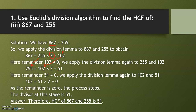Since 51 is not equal to zero, repeat the process. Now 102 becomes the dividend and 51 becomes the divisor. Divide 102 by 51 — the quotient is 2 and the remainder is 0. Since the remainder is zero, the HCF is 51.